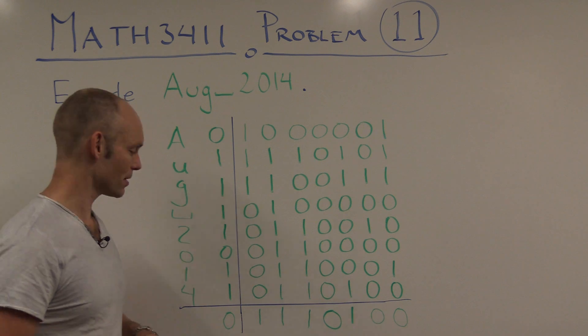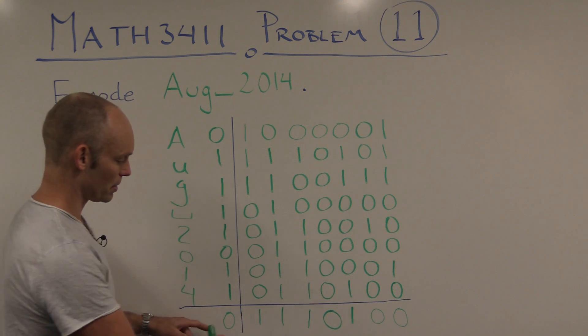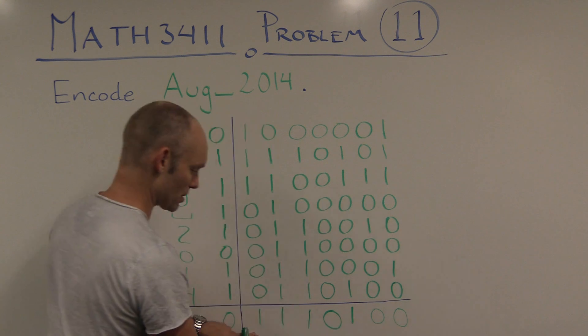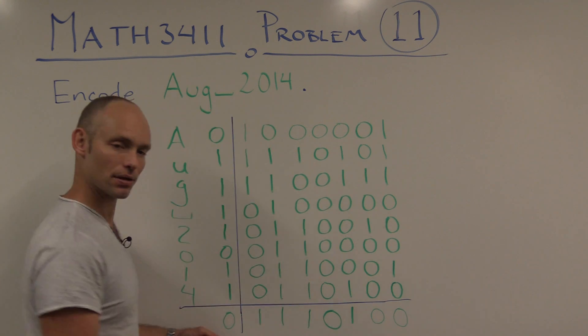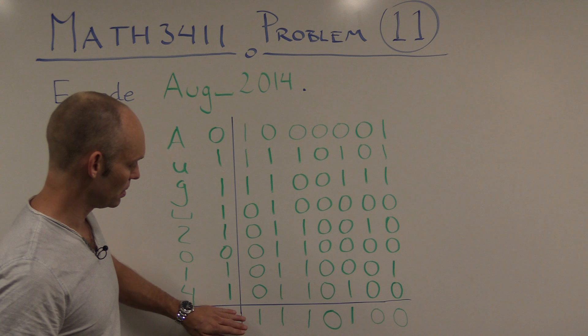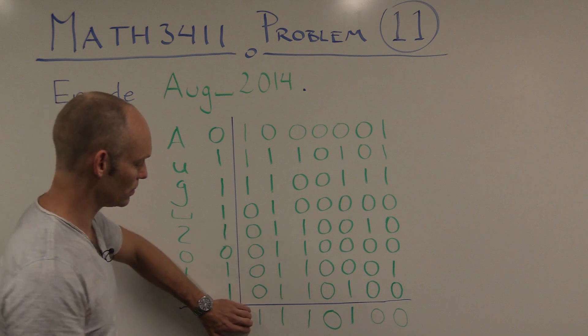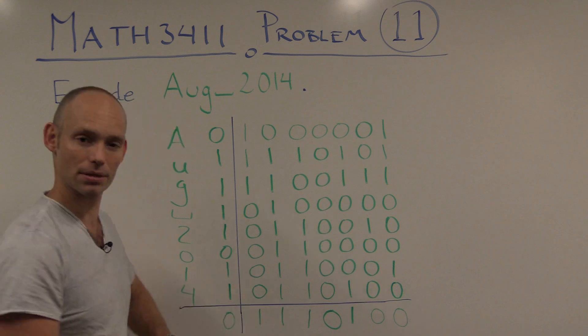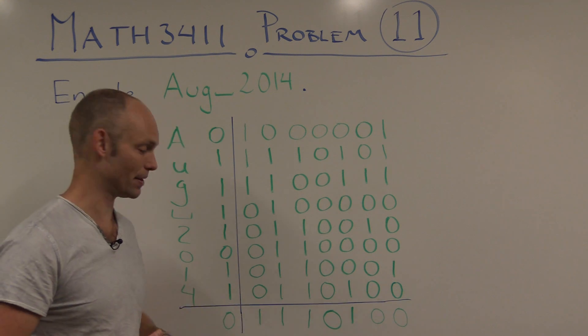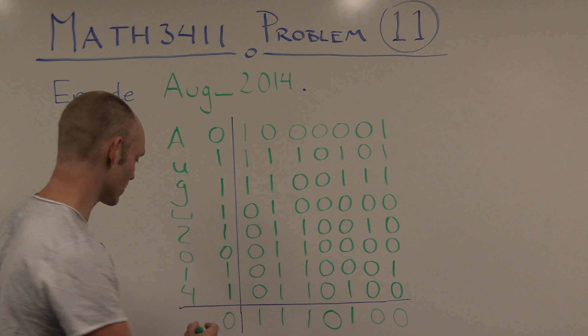Okay, so now we've got this checksum here. And then we look up the ASCII tables again, to the 7-bit ASCII tables, to see what character that corresponds to. And that turns out to be a T.